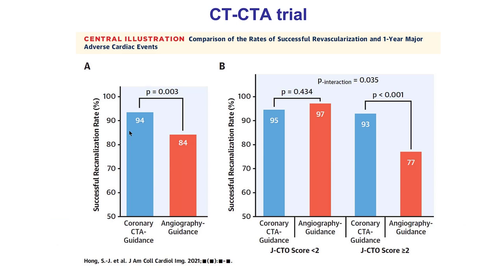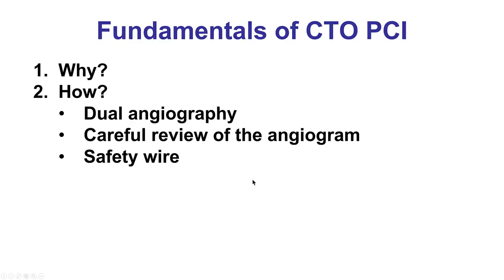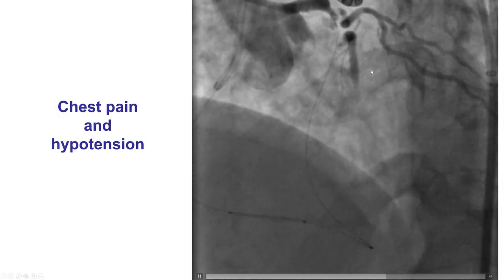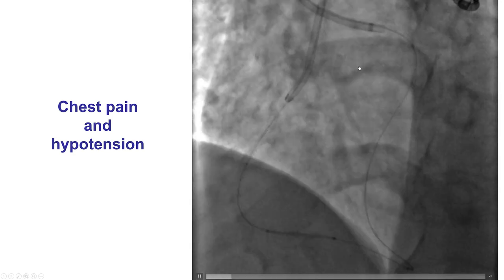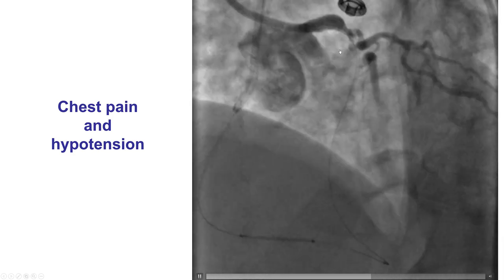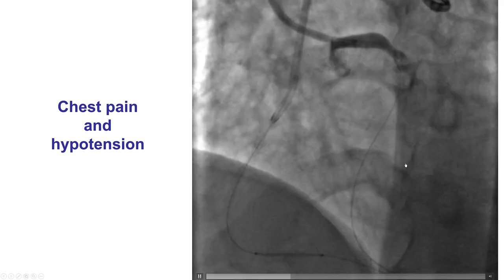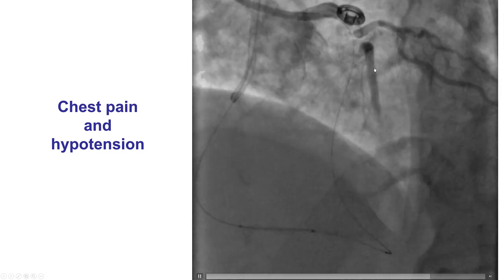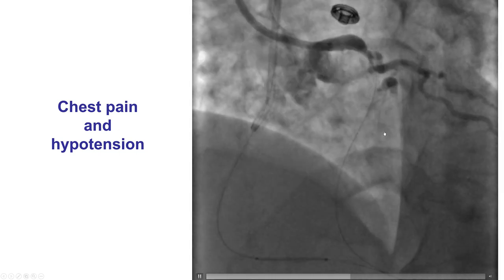There is increasing use of coronary CTA for planning CTO-PCI, and one study showed better success — especially in more complex lesions — when coronary CTA was performed prior to the procedure. It is also very important to insert a safety wire in the donor vessel when performing CTO-PCI. Donor vessel occlusion can be a catastrophic, potentially lethal complication, and having a safety wire facilitates treatment and prevents rapid deterioration.